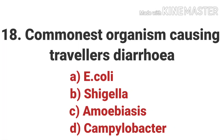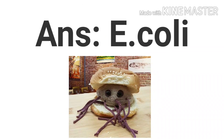The eighteenth question is: what is the commonest organism causing traveller's diarrhea? The options are E. coli, Shigella, Amoebiasis, and Campylobacter. The answer is E. coli.